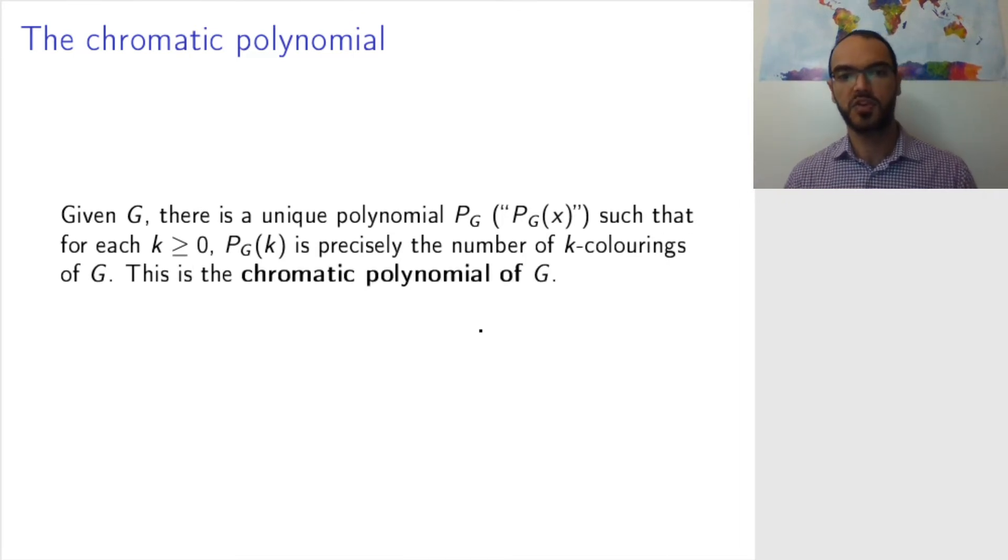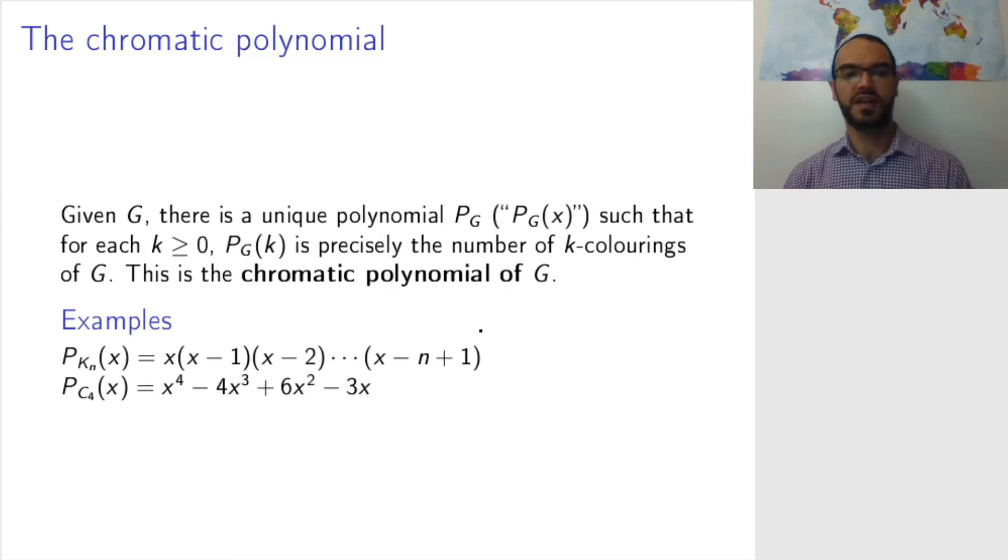This polynomial is called the chromatic polynomial of G, or the color polynomial of G, the chromatic polynomial of G. So, for example, for K_n,